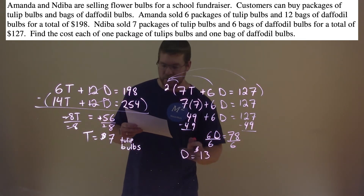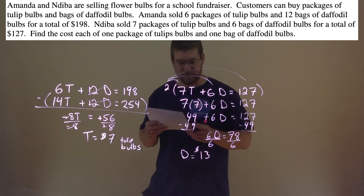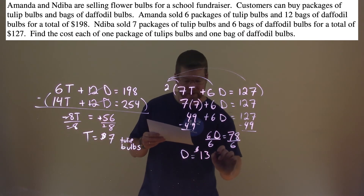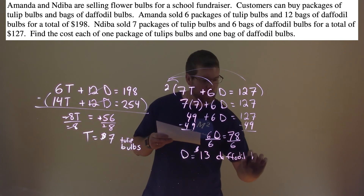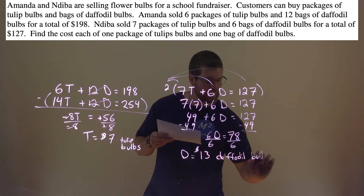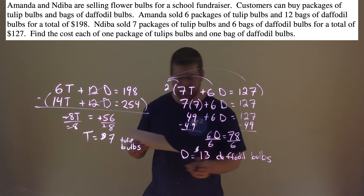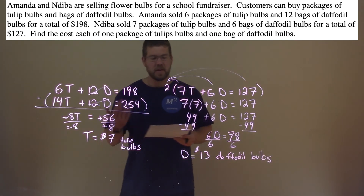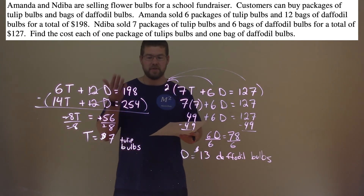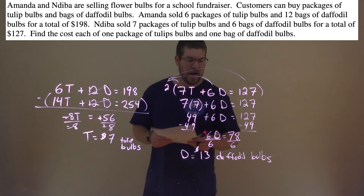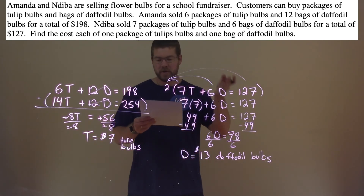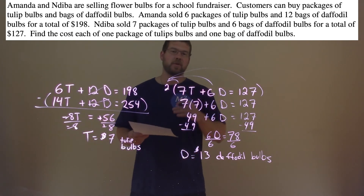And $13 is the price of the daffodil bulbs. How do you spell that? D-A-F-F-O-D-I-O bulbs. So there we have our final answer: the tulip bulbs package costs $7, and the bag of daffodil bulbs costs $13.